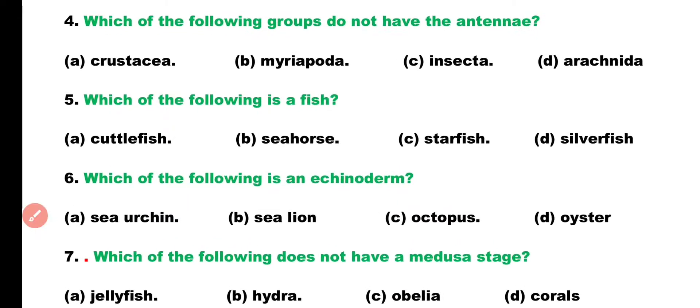Question 4. Which of the following groups do not have antennae? Crustacea, Myriapoda, Insecta, or Arachnida? Correct answer is Option D. Arachnids in which antennae are absent.